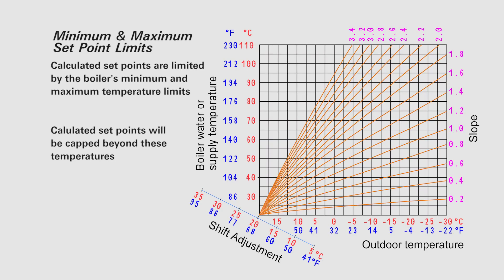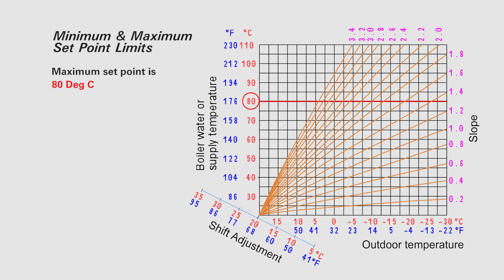Calculated set points are limited by the boiler's minimum and maximum temperature limits. Calculated set points will be capped beyond these two temperatures. The maximum set point limit is 80 degrees C or 176 Fahrenheit. The minimum set point limit is 30 degrees C or 86 Fahrenheit.